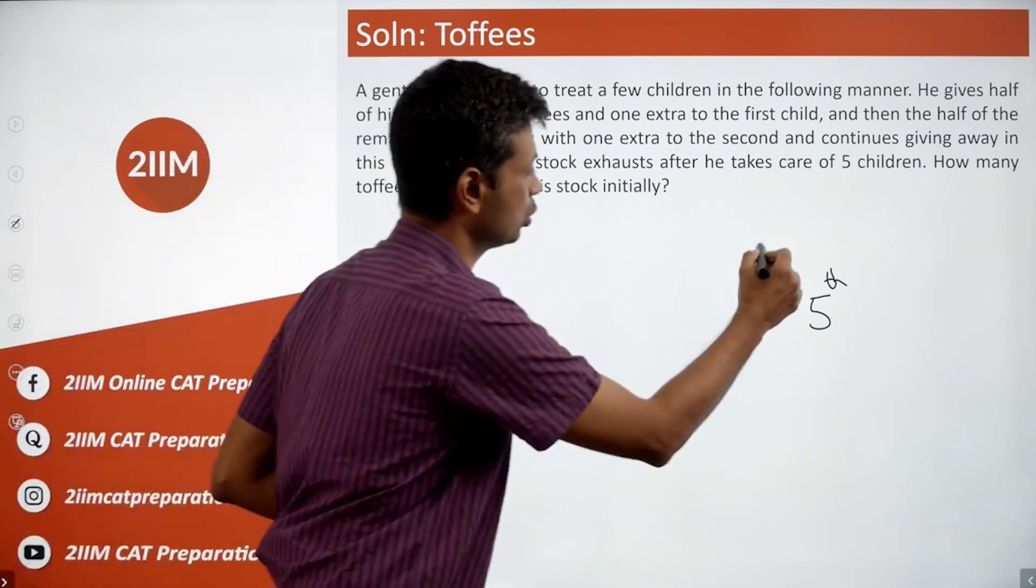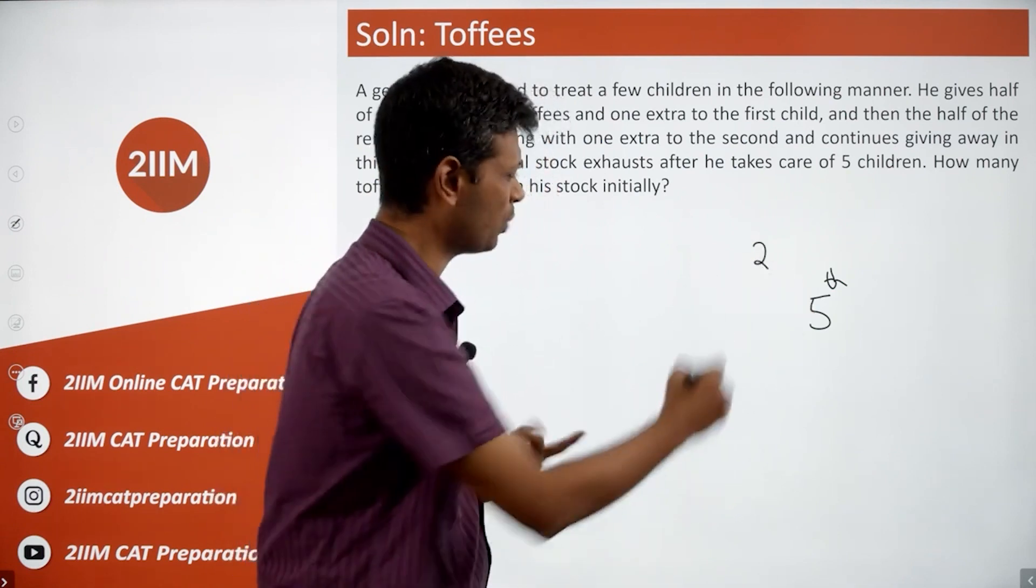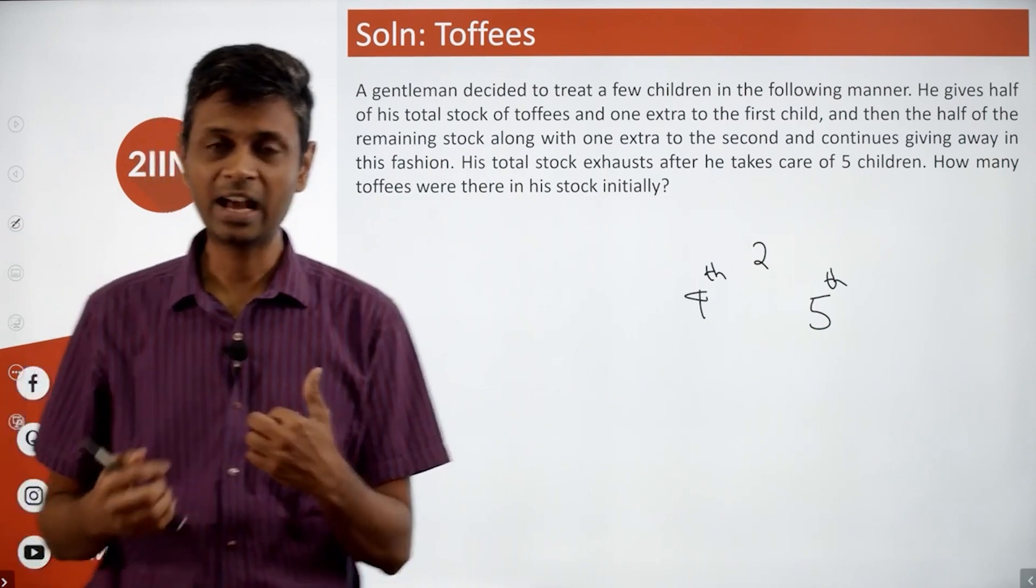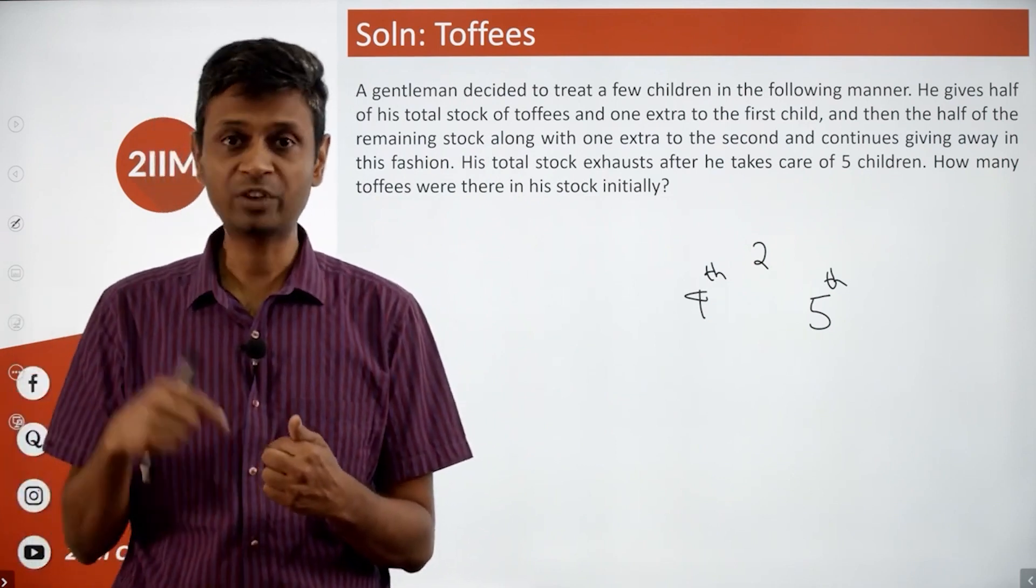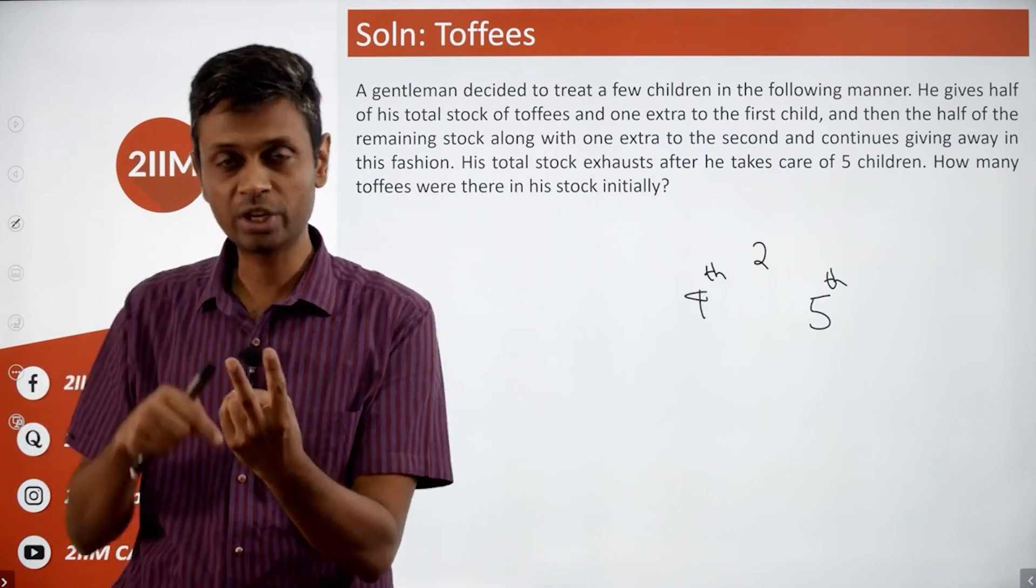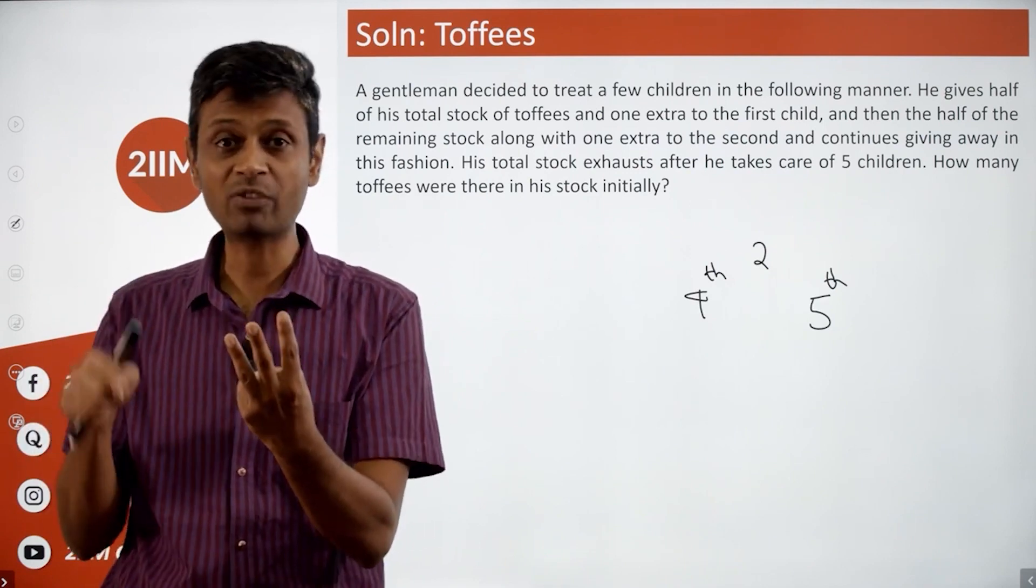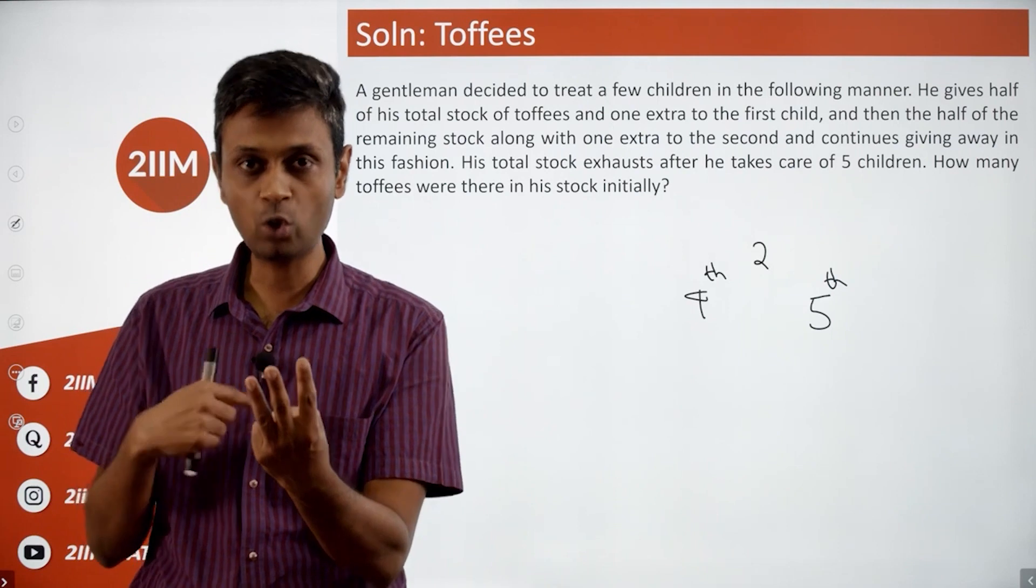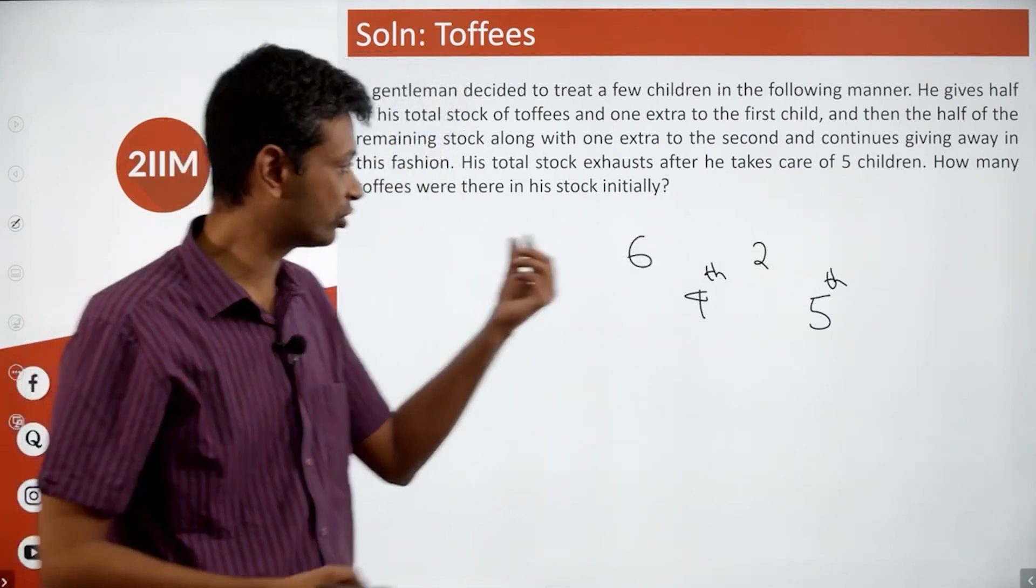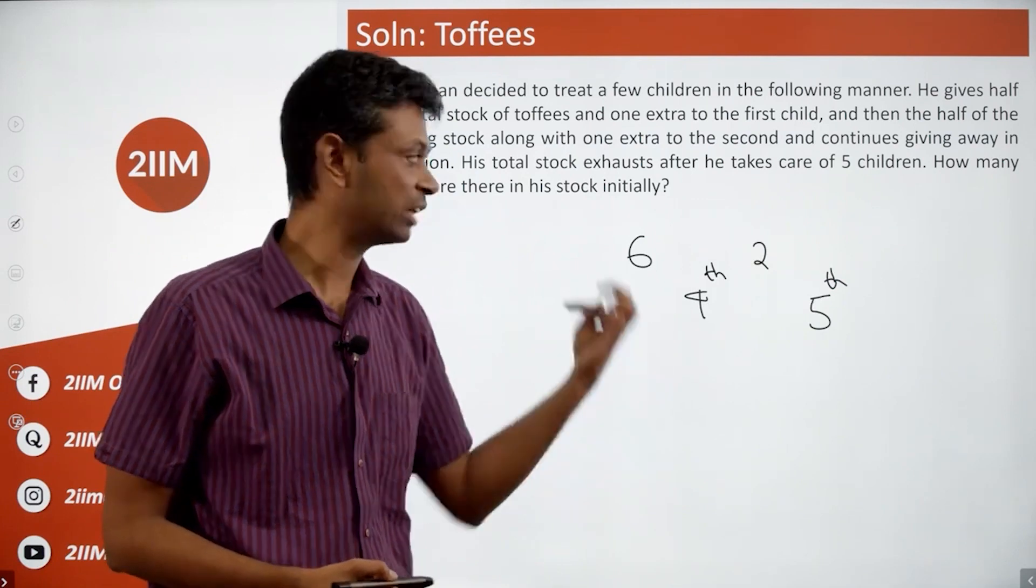Now let's go one more step back. He's given half of what he had and one more, after which he's left with two. So before giving that one more, he should have three. That is half of what he had. Or before he goes to the fourth kid, he should have had six chocolates. Half of six is three, plus one is four. He gives away four, he has two remaining.